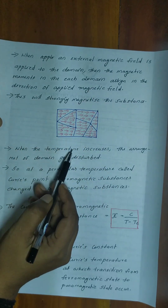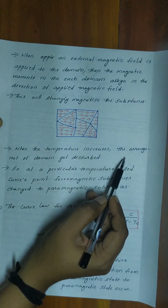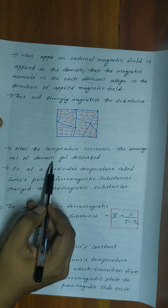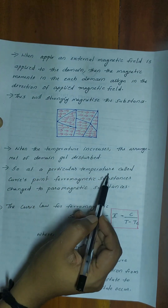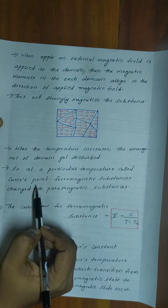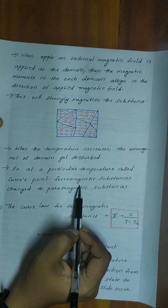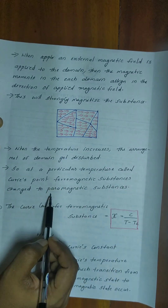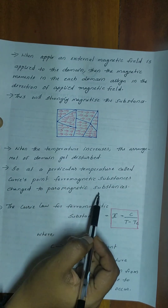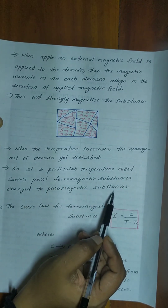When the temperature increases, the arrangement of domains gets disturbed. At a particular temperature called Curie's point, ferromagnetic substances change to paramagnetic substances.